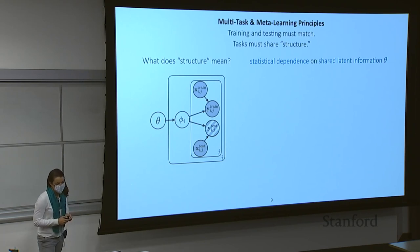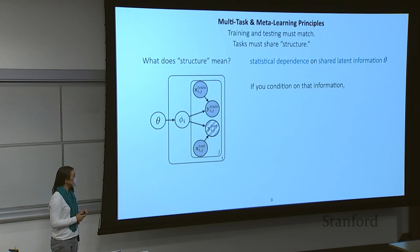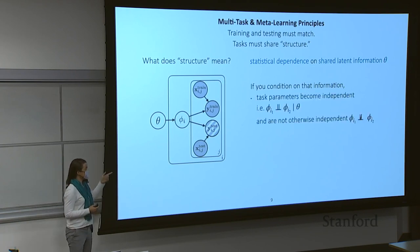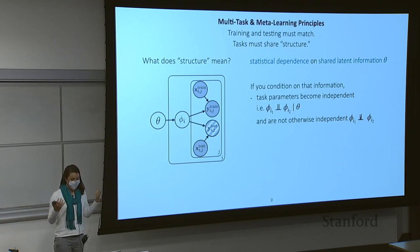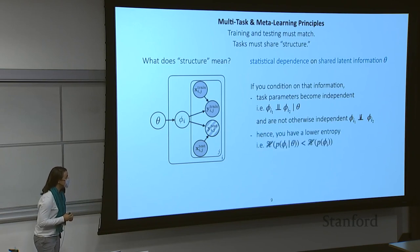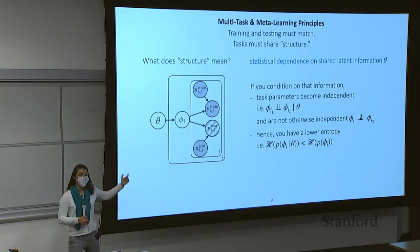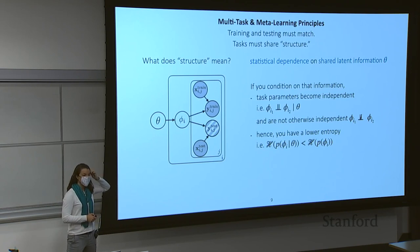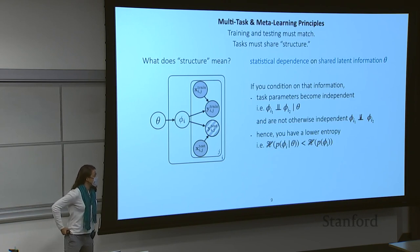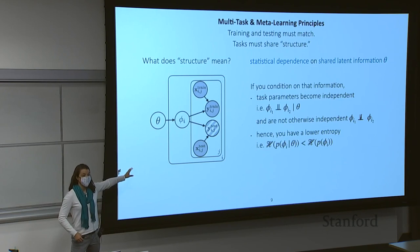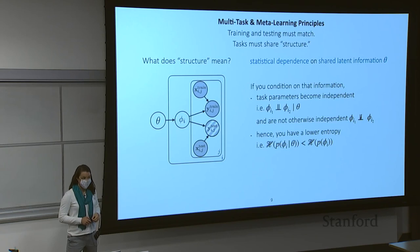If you condition on the shared information theta, then the task parameters become independent conditioned on that shared information — otherwise they're not independent. This also means you will have lower entropy: the distribution over phi has lower entropy if you condition on theta. This means that theta is giving you information about how to infer the underlying parameters, compared to if you were trying to learn the task-specific parameters completely from scratch.